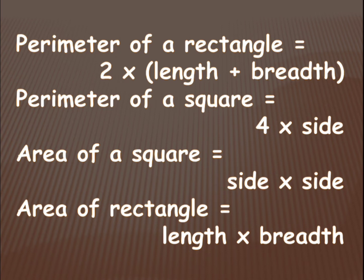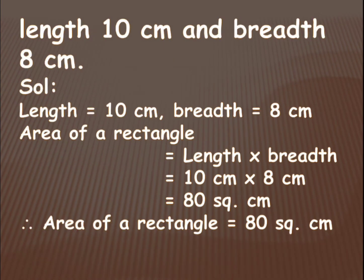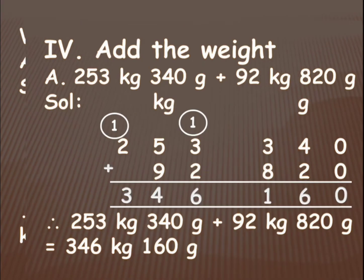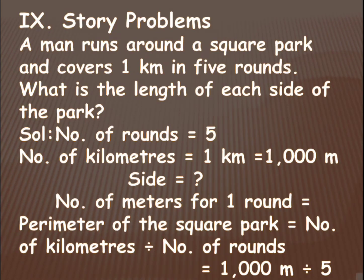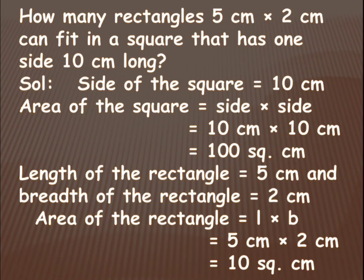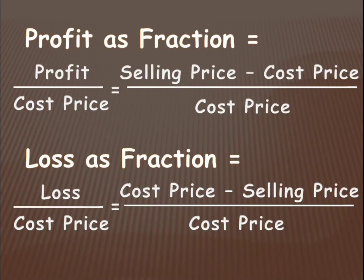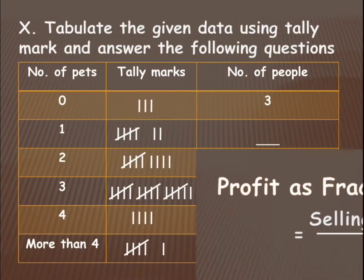So these are the perimeter and area formulas which will be useful for your first two bits and also in the story problems. Try to recollect all these things — volume of solids, adding weight, subtracting weight, finding elapsed time, adding time, subtracting time, and story problems. These are your story problems which we have learned yesterday — profit and loss, profit and loss fraction — all these we have learned yesterday, isn't it?